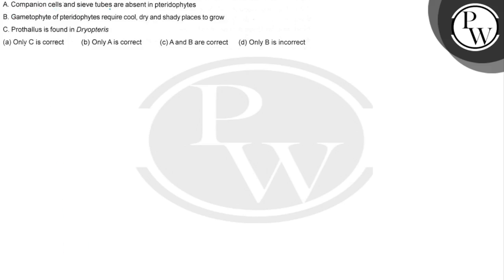The first statement says companion cells and sieve tubes are absent in pteridophytes. I will tell you that phloem is a complex tissue which transports food in plants.